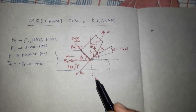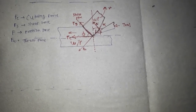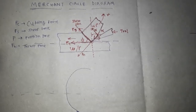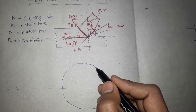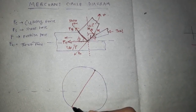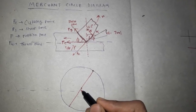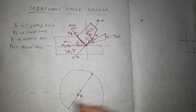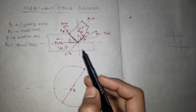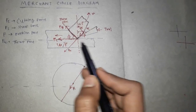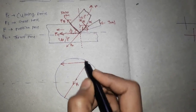Now let's see how to draw these forces on the Merchant Circle. First we draw a circle, and we draw a diameter of the circle. This diameter is the resultant of all forces acting during the machining operation. If we know the value of this resultant force, we can calculate the values of all other forces. The cutting force acts when the tool cuts the workpiece, so we draw the cutting force FC here.